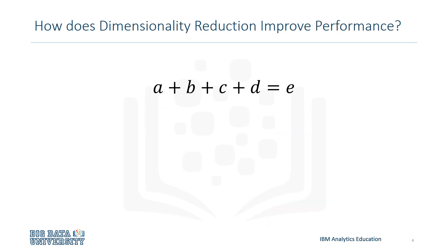So how exactly does dimensionality reduction improve performance? It does so by reducing the number of features that are to be considered. To see how this works, think of a simple algebraic equation: A plus B plus C plus D equals E. If you can equate AB equals A plus B, making a representation of two variables into one, then you're using Feature Extraction to reduce the number of variables.